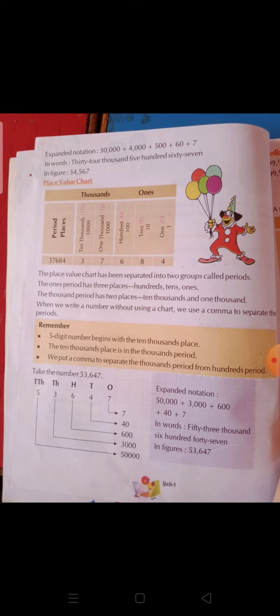This is our expanded notation — our expanded form. We will write the number in expanded form. In words, how do we write 53,647? We write it as fifty-three thousand six hundred forty-seven.